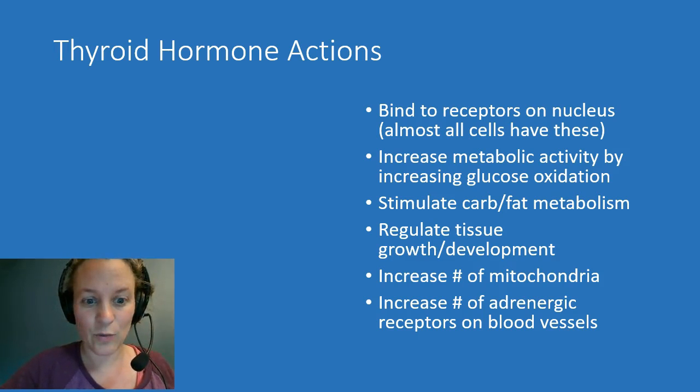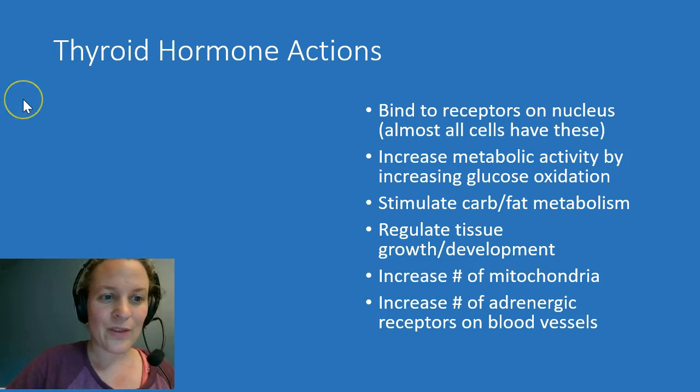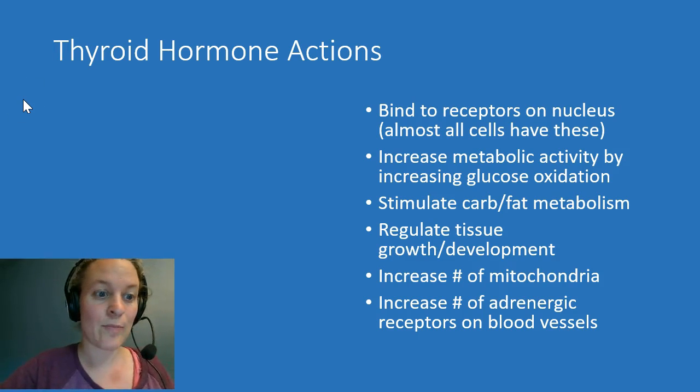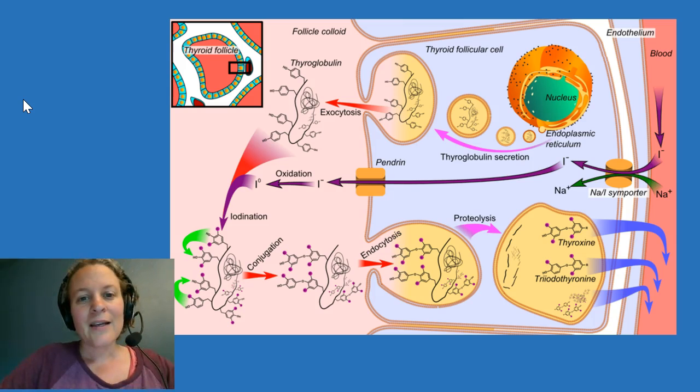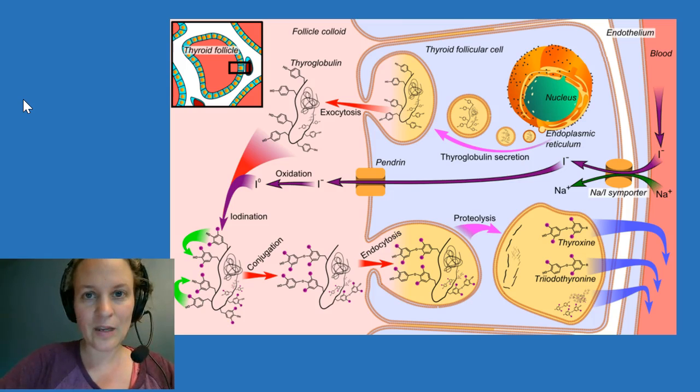Now the next question that I want to answer for you is how we make thyroid hormone, and I think this is a really interesting process. So thyroid hormone is produced in the thyroid gland, and the thyroid gland is in the neck. And it's made up of a bunch of thyroid follicles, so it's basically these thyroid cells surrounding a little glob of colloid. And there's all these different follicles throughout the thyroid gland. So these blue cells here are thyroid cells, and then the red circle is a cross-section of a blood vessel.